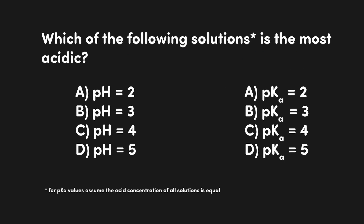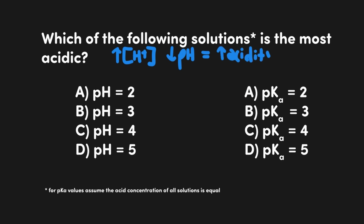Now let's shift over to the p-scale. This question asks: which of the following solutions is the most acidic? Remember that the H+ concentration and the p-scale are inverses — as H+ concentration goes up indicating a more acidic solution, the pH value would be dropping. So we would be looking for the lowest pH value to indicate the most acidic solution, and in that case the answer is A with a pH of 2. And since we can relate pH with pKa, we would also be looking for the lowest pKa value, which is also A since that's 2.